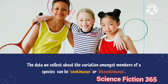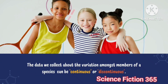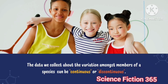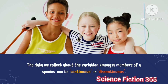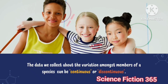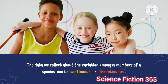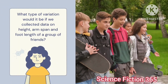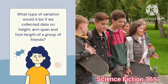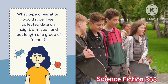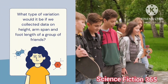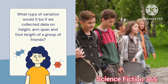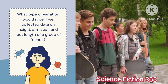The data we collect about variation amongst members of a species can be continuous or discontinuous. What type of variation would it be if we collected data on height, arm span, and foot length of a group of friends?